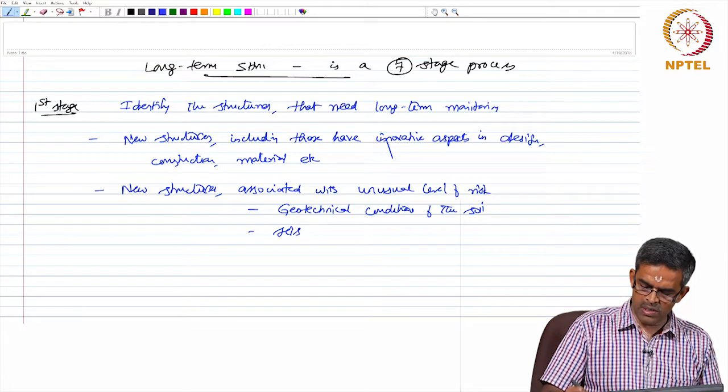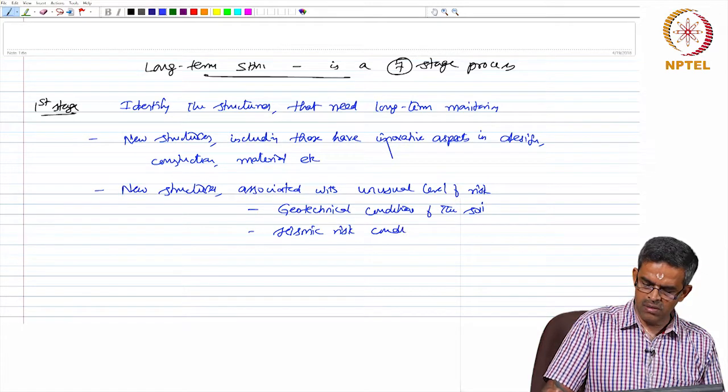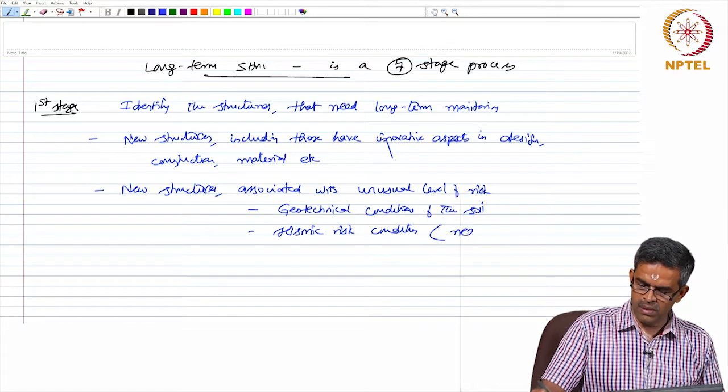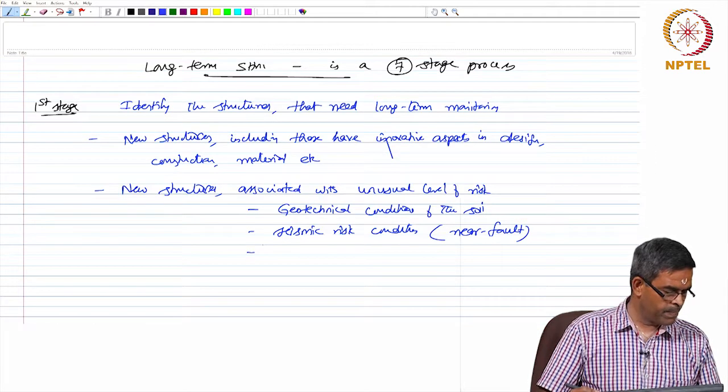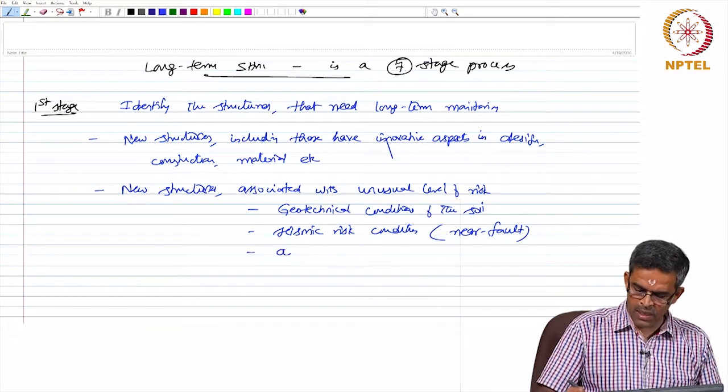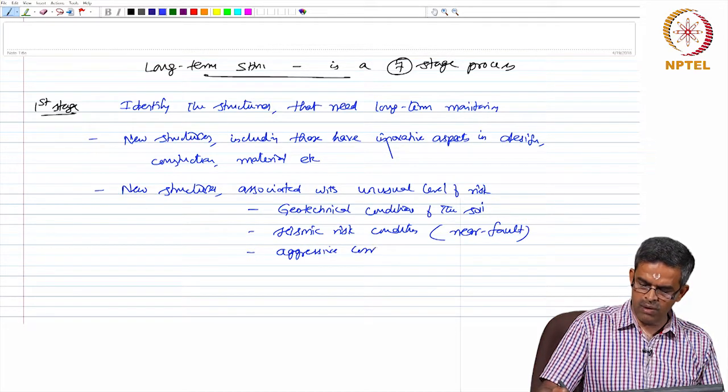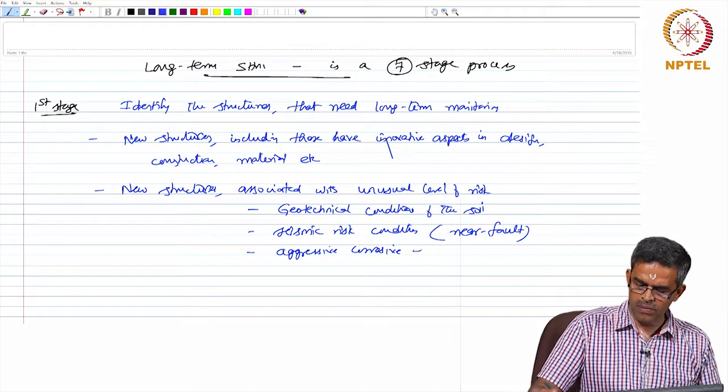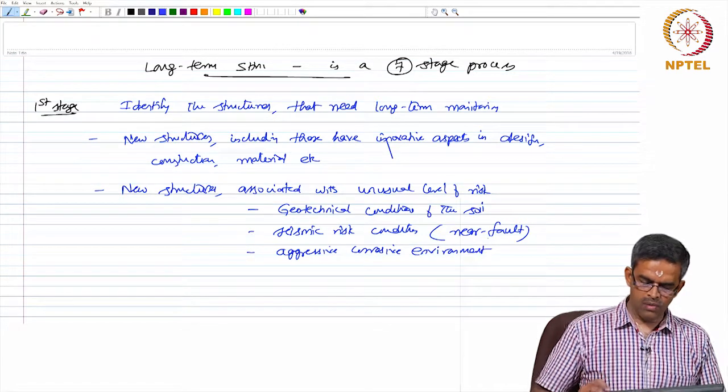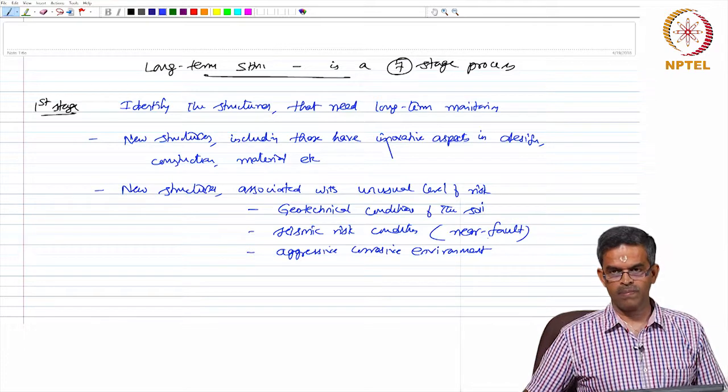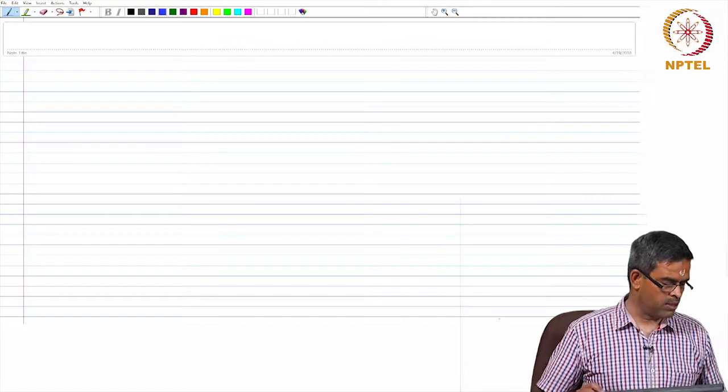They must have been located in seismic risk conditions. For example, there can be an active fault nearby, or it can be an aggressive corrosive environment. So, when structures are located under unusual level of risk, then one can go for long-term monitoring.